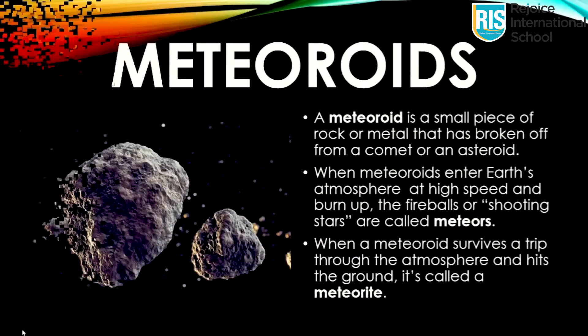Now let's know about meteorites. A meteorite is a small piece of rock or metal that is broken off from a comet or an asteroid. Meteorites can form from asteroids colliding or as debris from comets speeding by the sun. When meteorites enter Earth's atmosphere at high speed and burn up, the fireballs or shooting stars are called meteors. When a meteorite survives a trip through the atmosphere and hits the ground, it's called a meteorite.